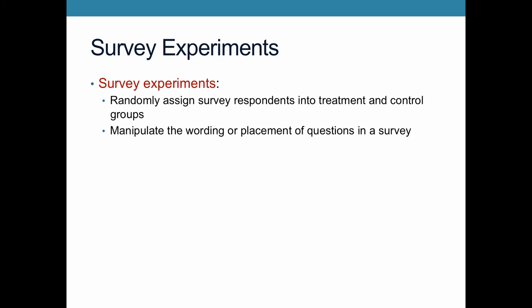The third type of experiment that has become really common are survey experiments. Survey experiments randomly assign survey respondents into treatment and control groups. Unlike with a regular survey, there are actual treatment and control groups, and you give them different surveys. In the survey itself, the survey becomes the experimental treatment — you manipulate the wording or the placement of questions. The treatment is the survey wording or placement, because you think wording or simply asking a question will predispose people to have a certain attitudinal response.